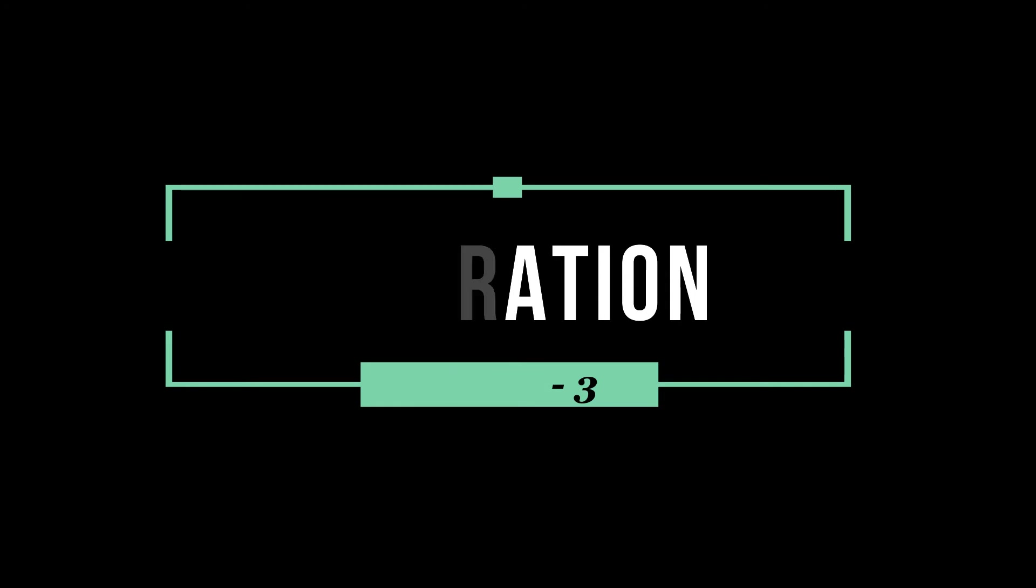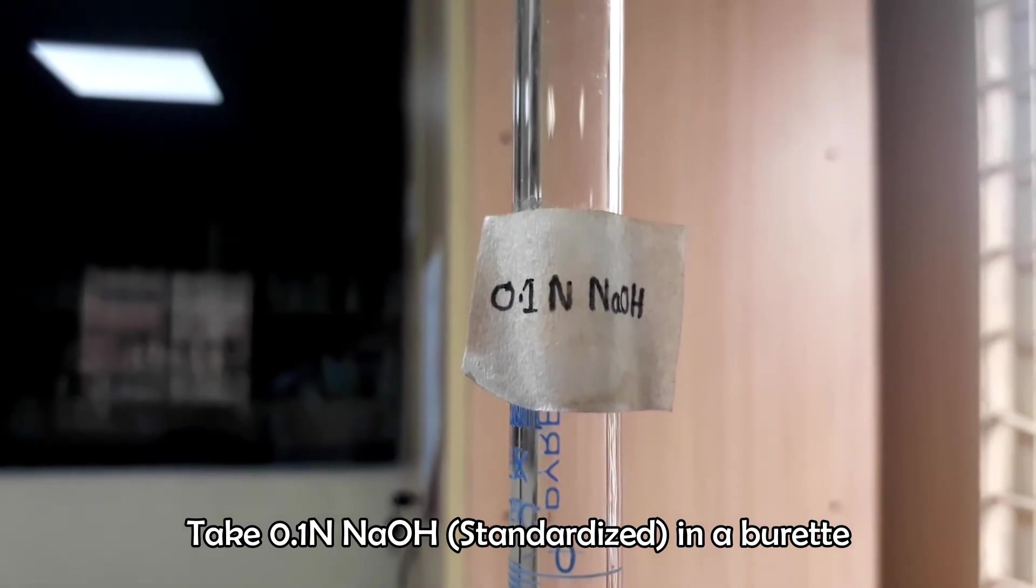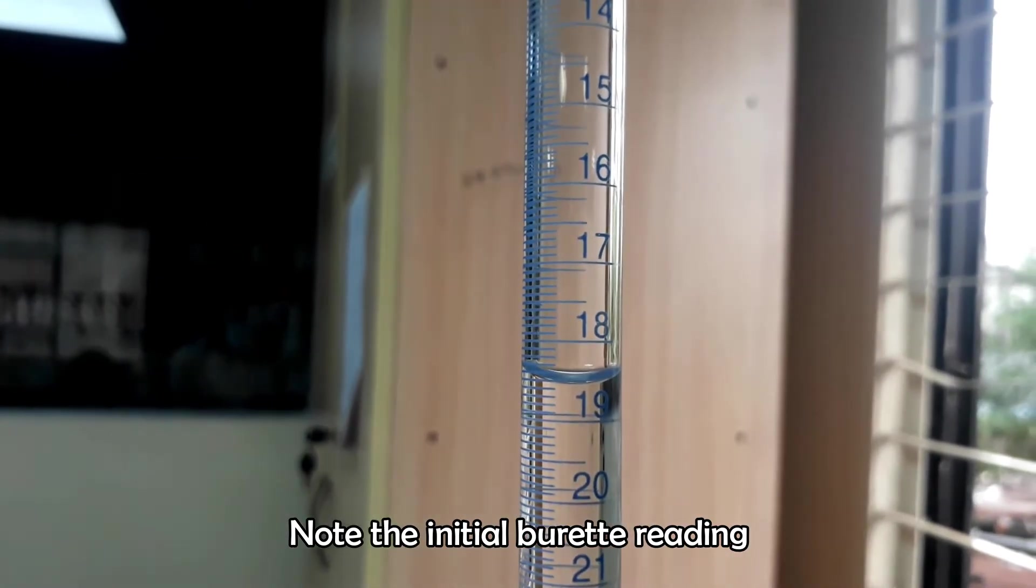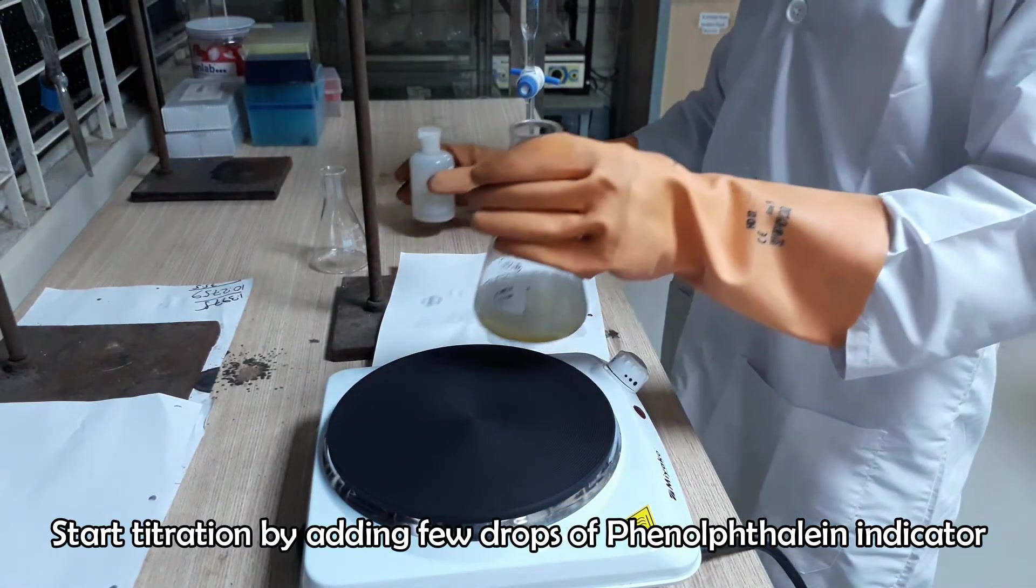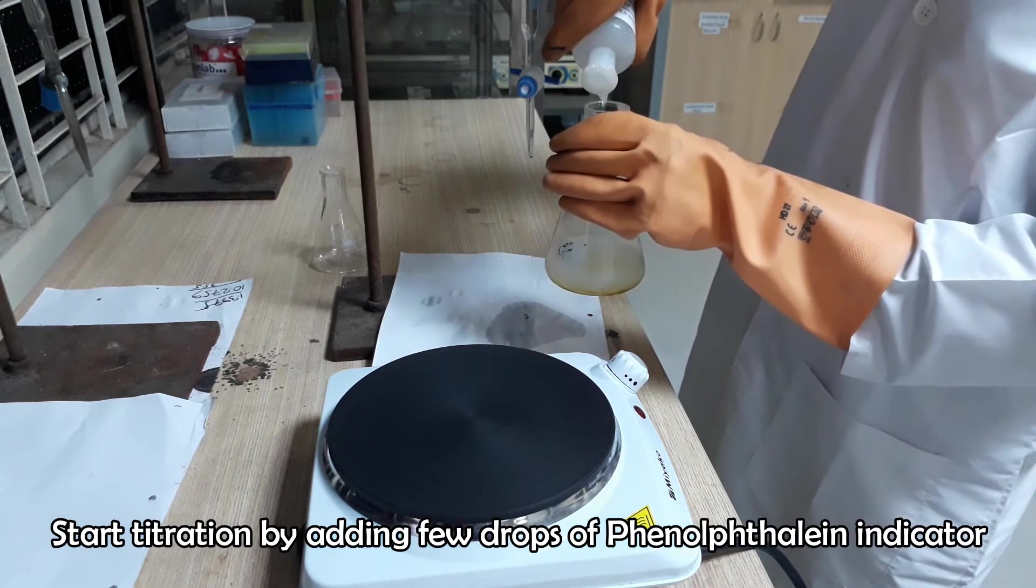Now it's time for titration. Take 0.1 normal sodium hydroxide in a burette. Note the initial burette reading. Start titration after adding a few drops of phenolphthalein indicator.